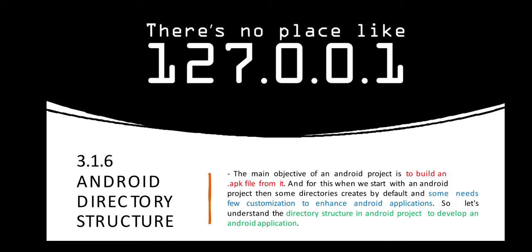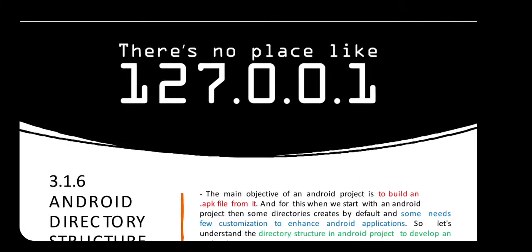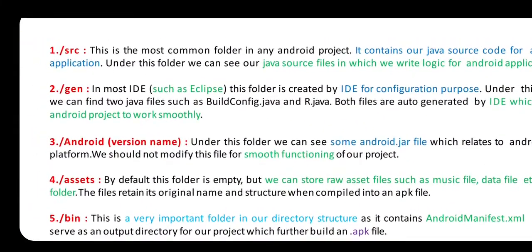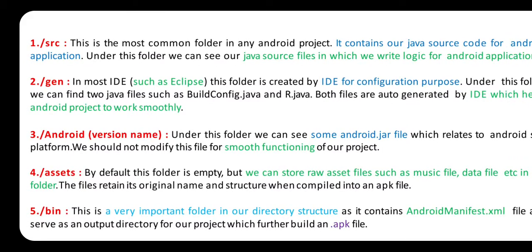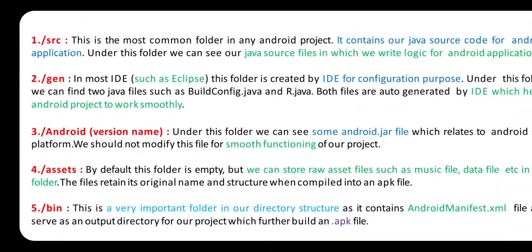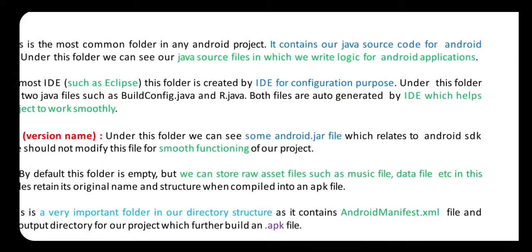Next is the Android directory structure. The main objective of an Android project is to build an .apk file. When we start with an Android project, some directories are created by default, and some need customizations to enhance the application. The source directory (SRC) is the most common folder in an Android project — it contains the Java source code. Under this folder we can see the Java source files in which we write the logic for our Android application.